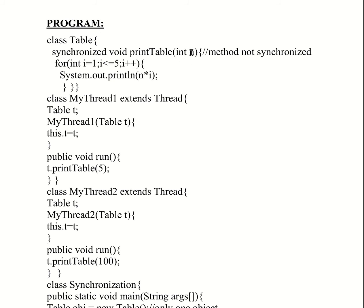The parameter we pass to printTable is n. In the run method, we call the multiplication table of 5. In myThread1 the first thread prints the multiplication table of 5, and the second thread prints the multiplication table of 100. The print steps use a for loop: for i equal to 1, i less than or equal to 5, i++, printing n into i.